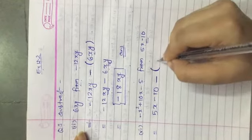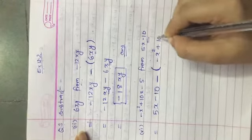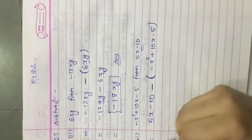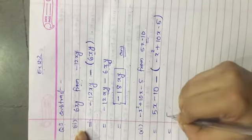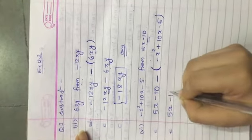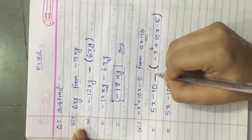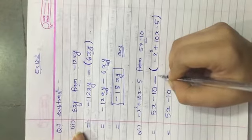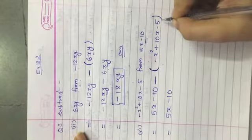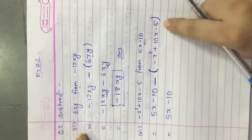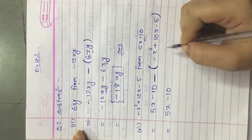So open the bracket and write the first expression as it is. Now in the first step we will open the bracket. So 5x minus 10 as it is. Outside the bracket we can see that a minus sign is there. When you open this bracket with the minus sign, the signs will change.